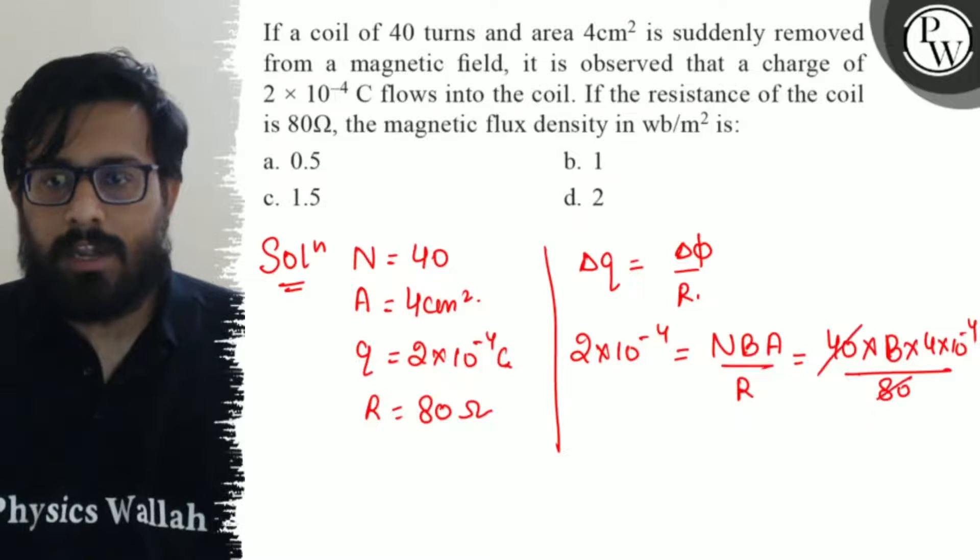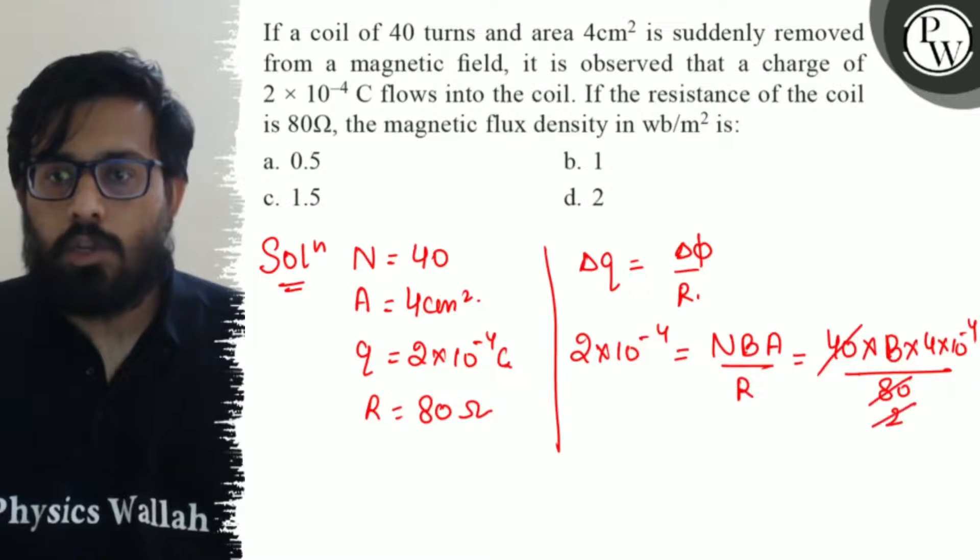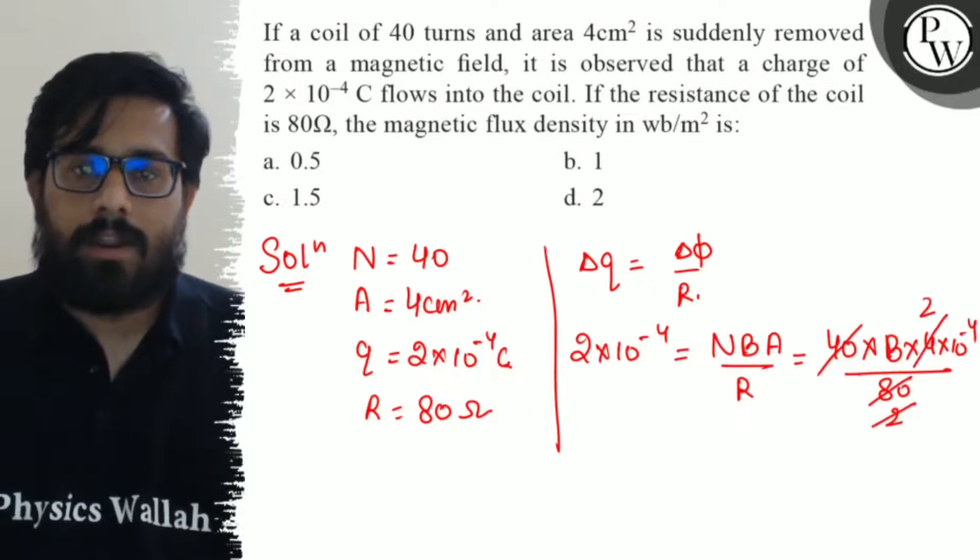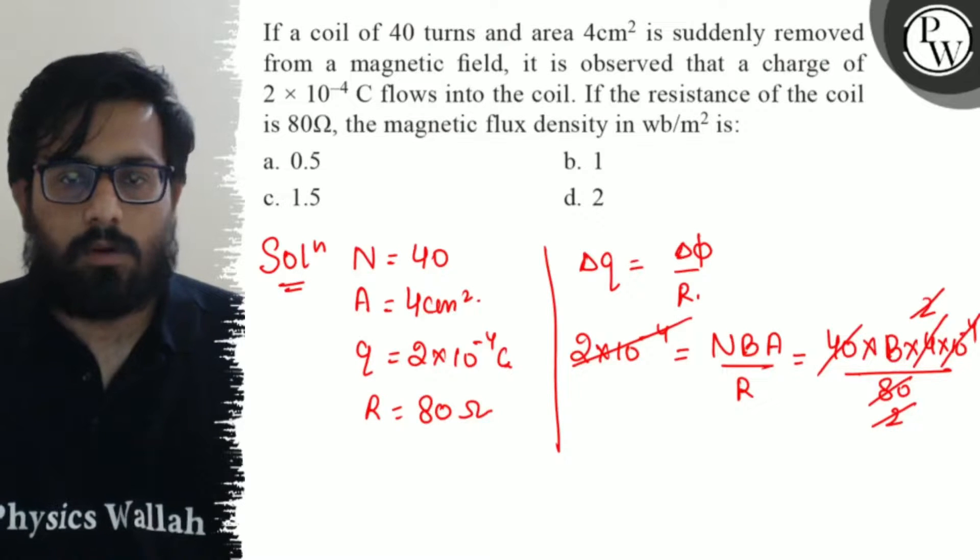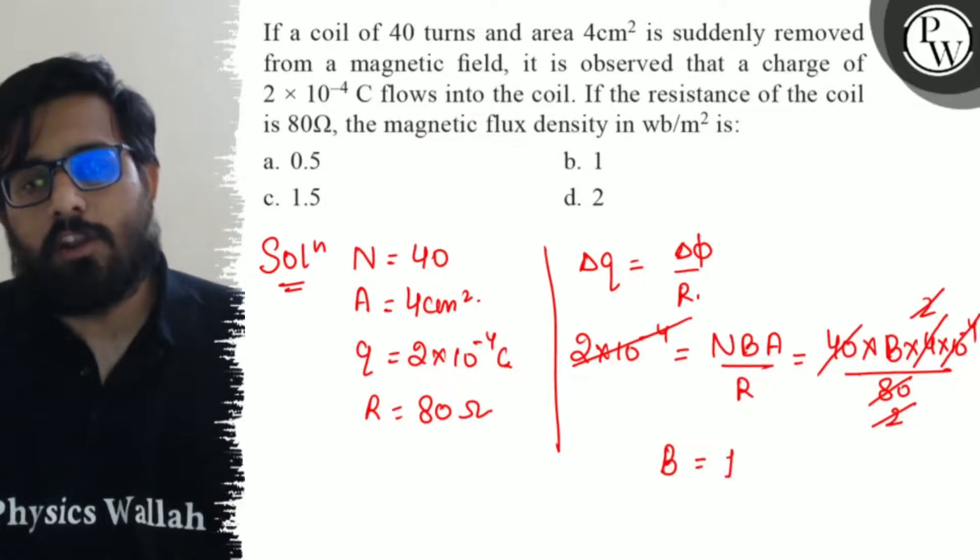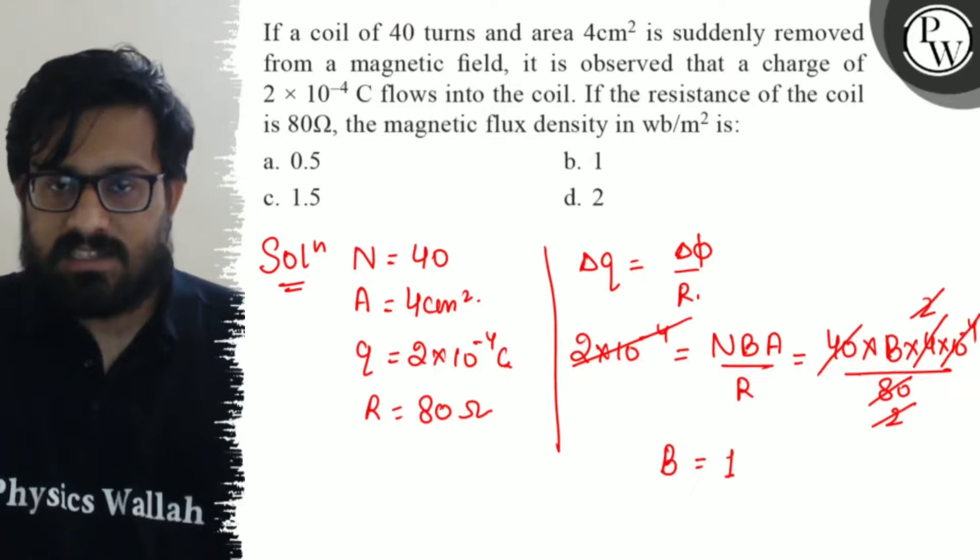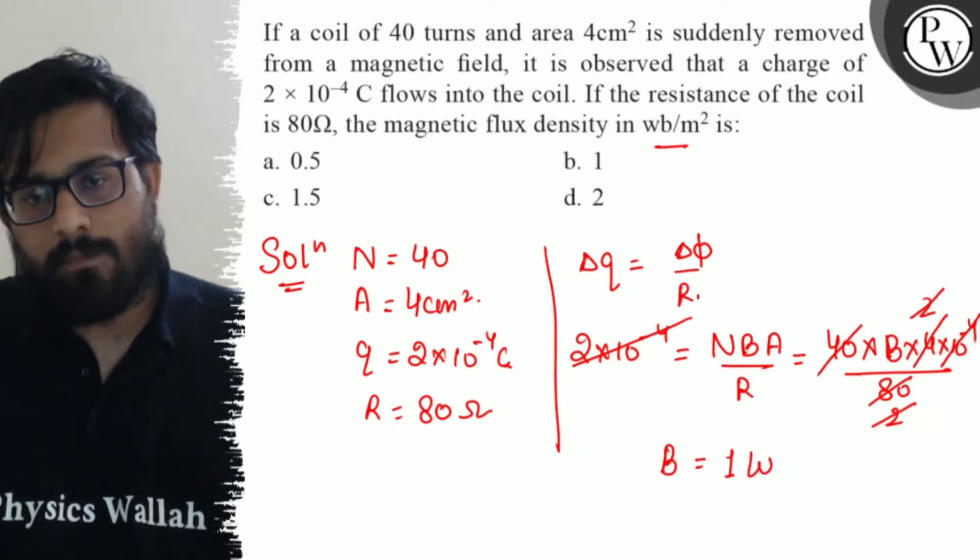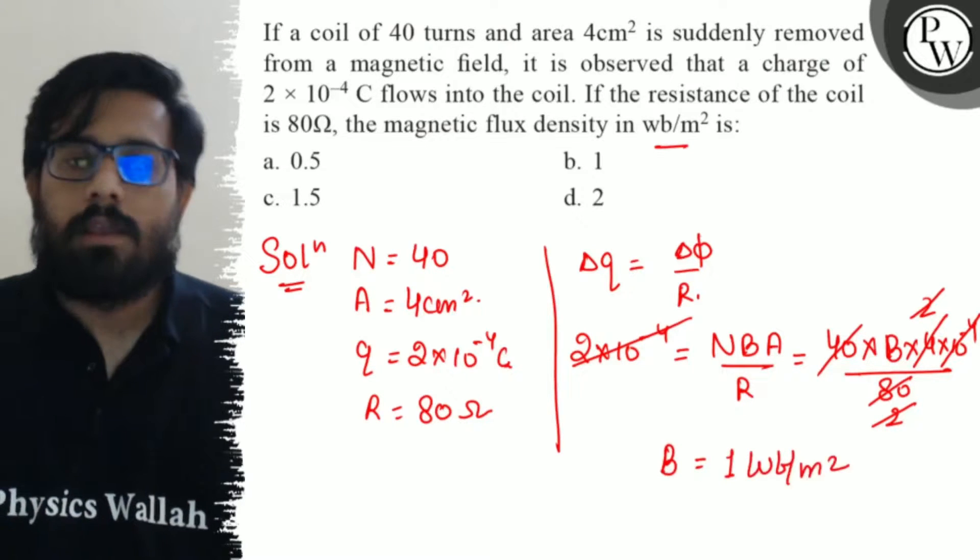Solving this: 40 goes to 80, 2 to the 4, and 2×10⁻⁴ and 10⁻⁴ cancel out. So solving this part you get the value of B as 1.